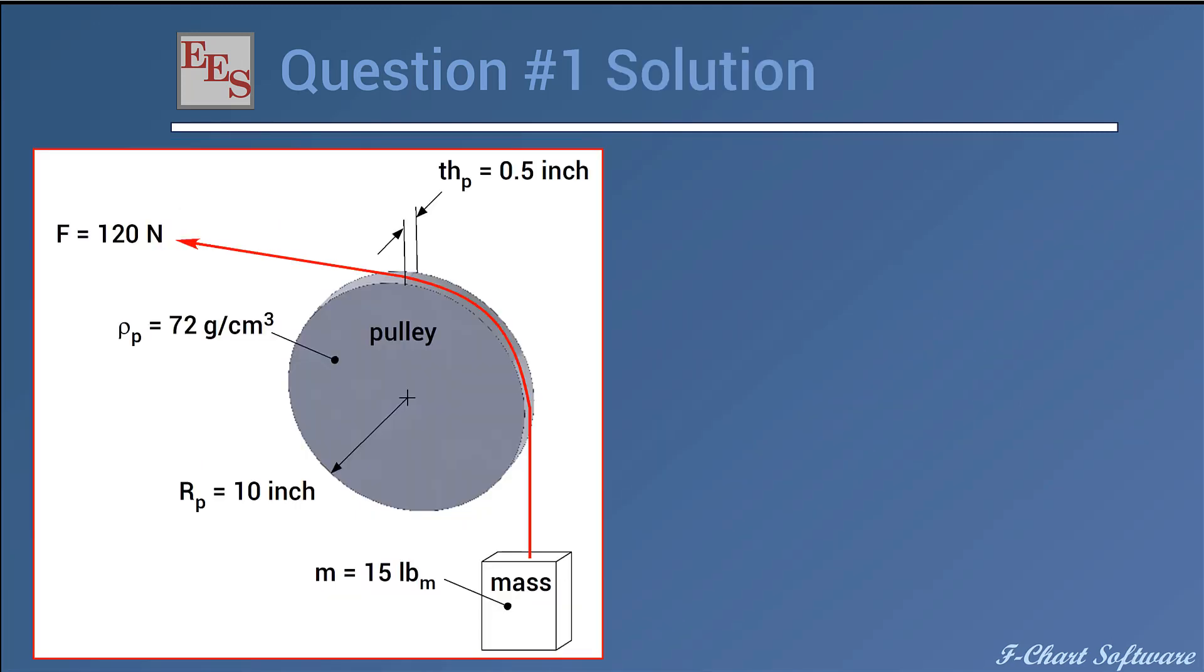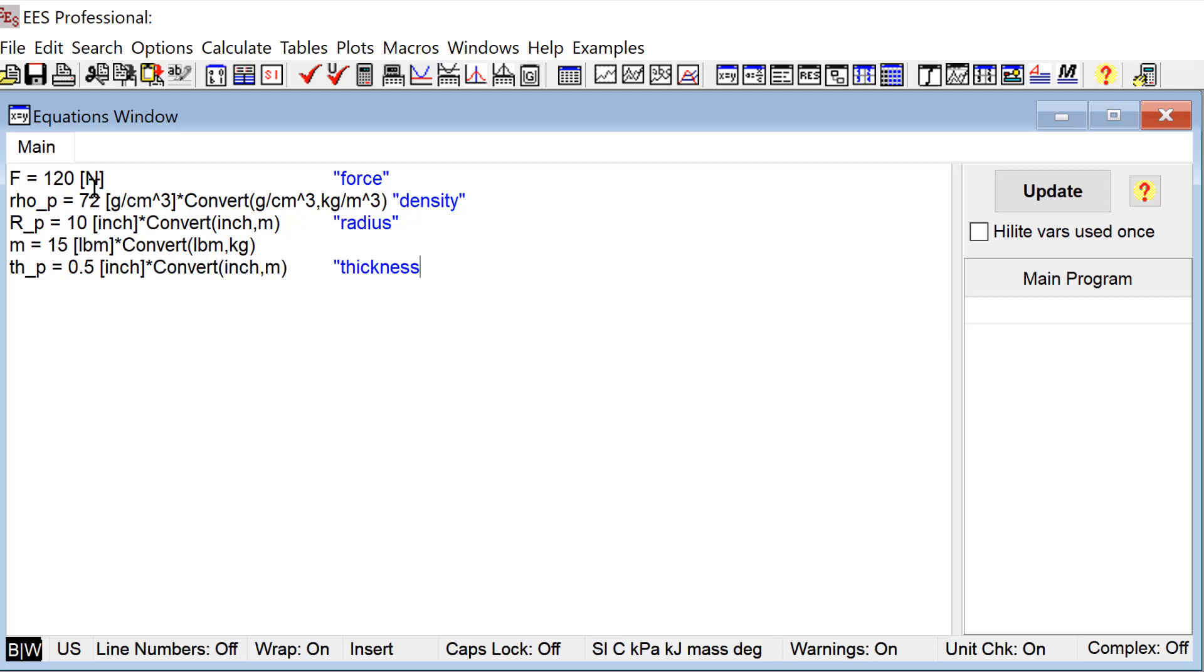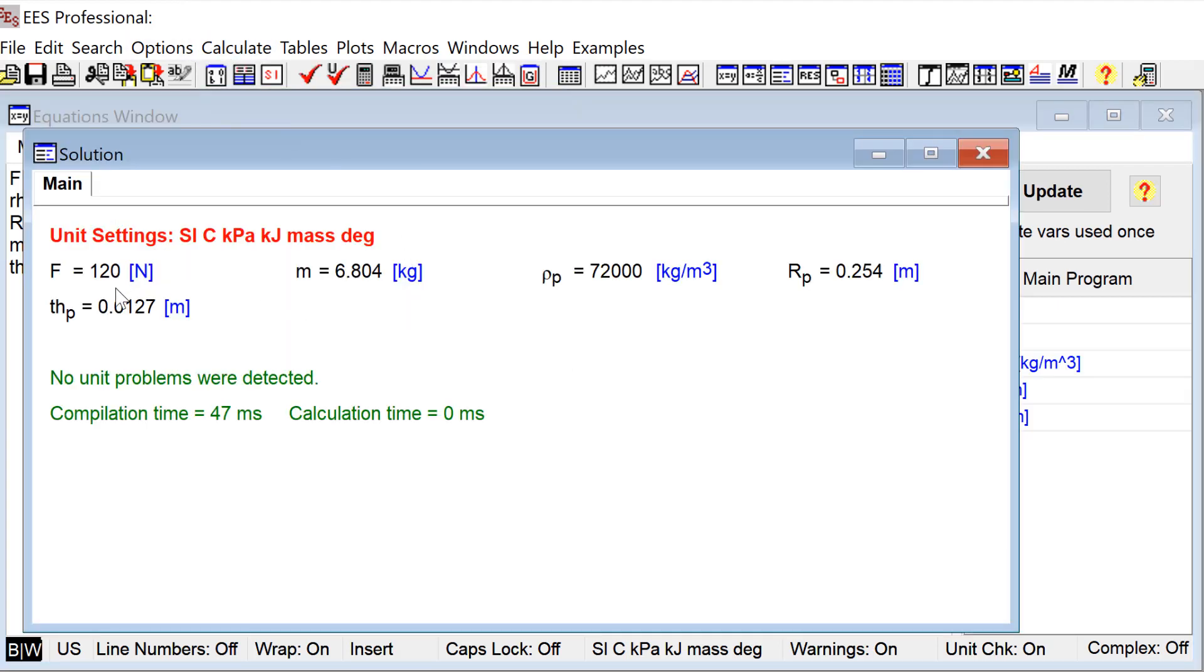All right, so let's solve these two questions. We'll start with the pulley problem and use the suggested method for dealing with units that we talked about in the last video. We will take all of the inputs to the problem—there's about five of them—and immediately enter them and convert them to base SI units. So that's what I'm doing here. You can see everything is in meters or kilograms or base SI units like that.